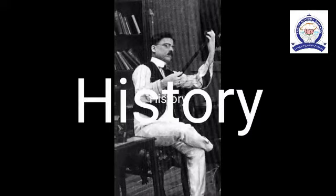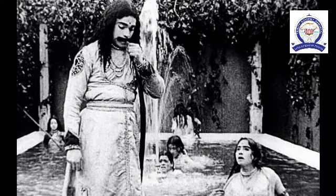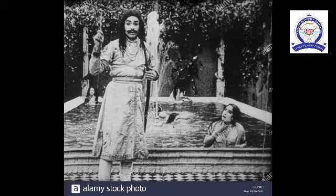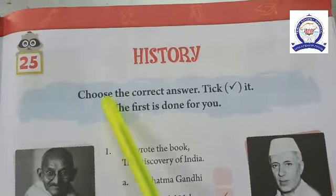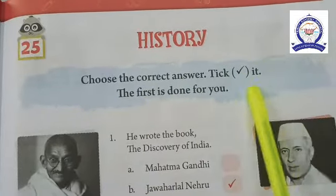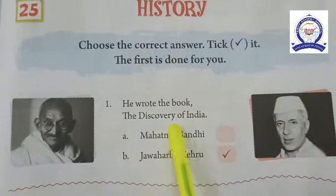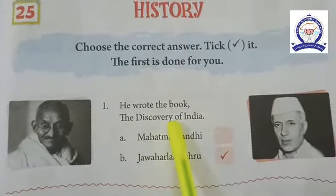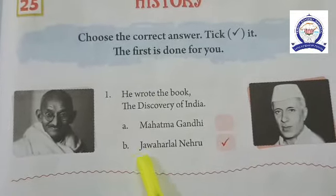History is the study of the past — specifically the people, societies, events, and problems of the past and our attempts to understand them. Lesson 25: History — choose the correct answer. Number one: he wrote the book 'The Discovery of India' — the answer is option B, Jawaharlal Nehru. Number two: he wrote the Mahabharata — the answer is option B, Ved Vyasa.